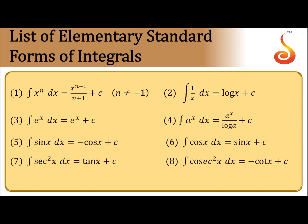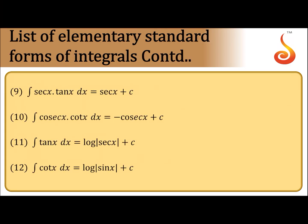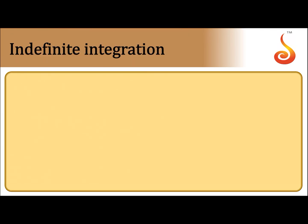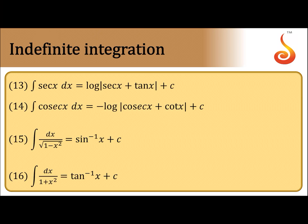The integral of sec²x dx is tan x plus c; the integral of cosec²x dx is −cot x plus c; the integral of sec x tan x is sec x; the integral of cosec x cot x is −cosec x; the integral of tan x is log|sec x|; the integral of cot x is log|sin x|; the integral of sec x is log|sec x + tan x|, which can also be written as log|tan(π/4 + x/2)|.